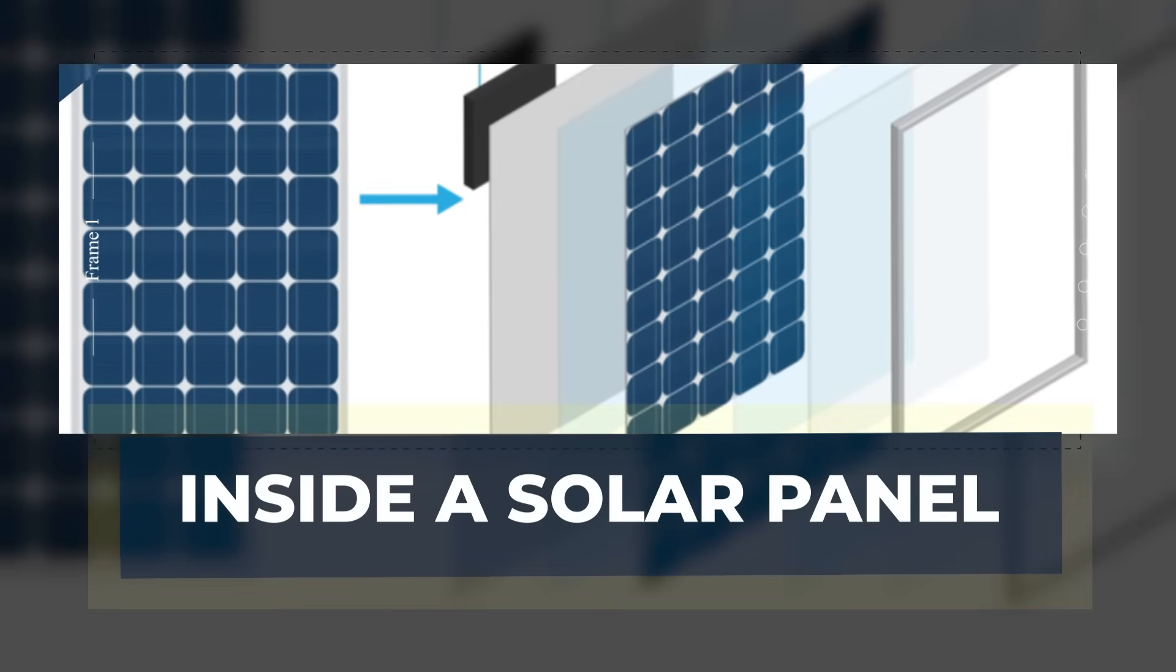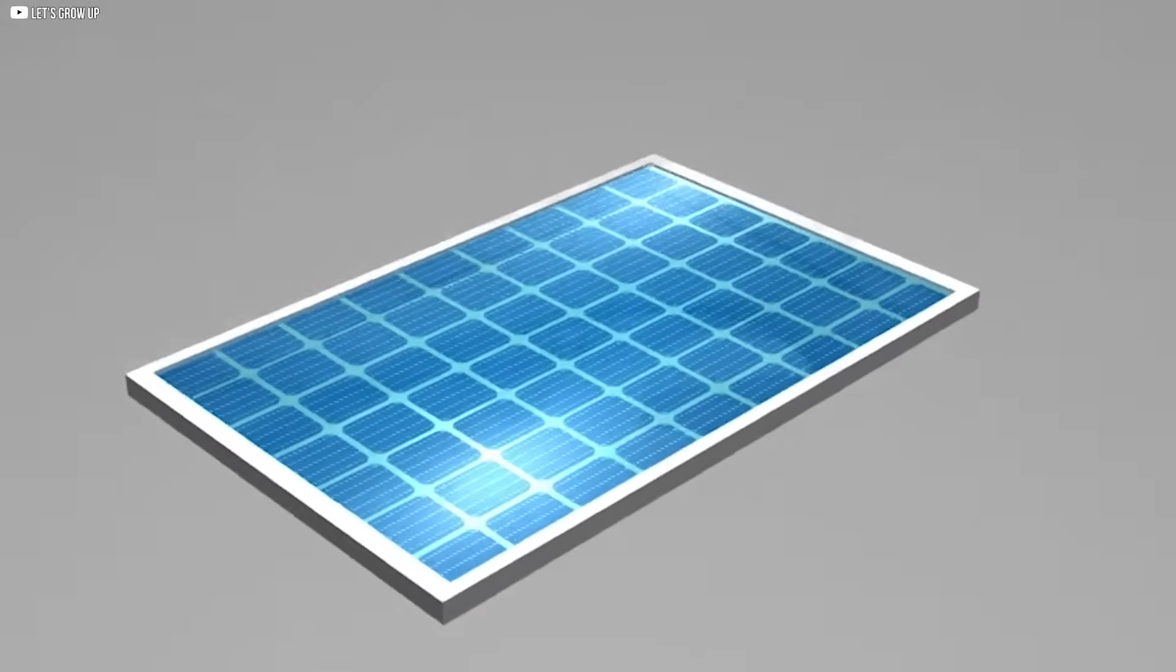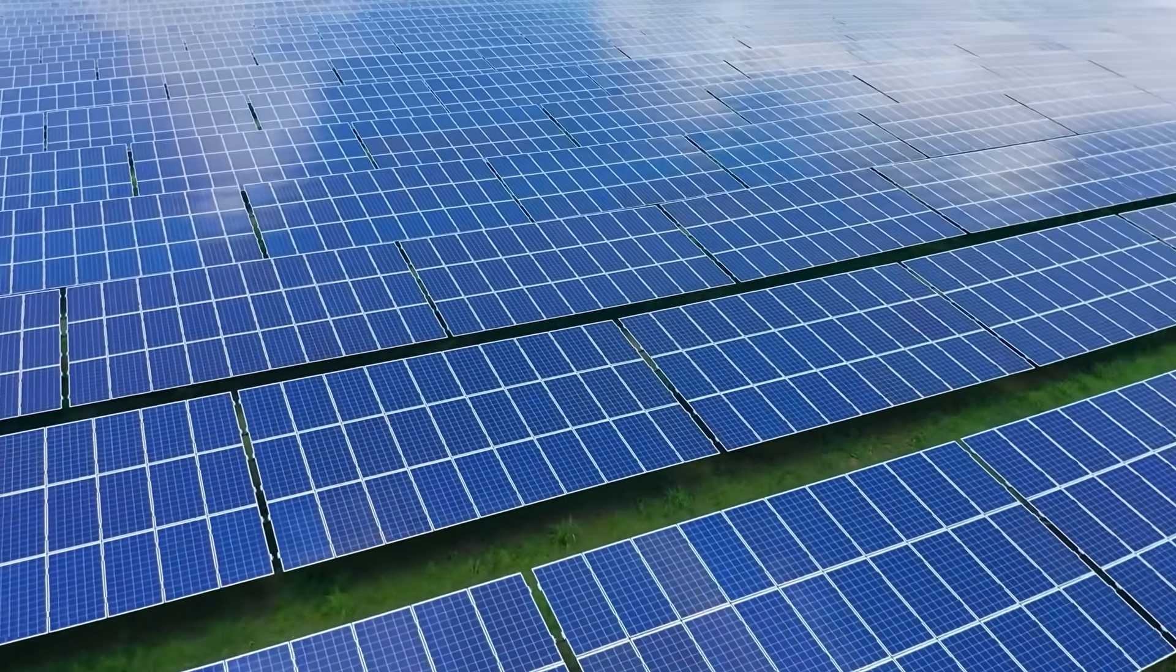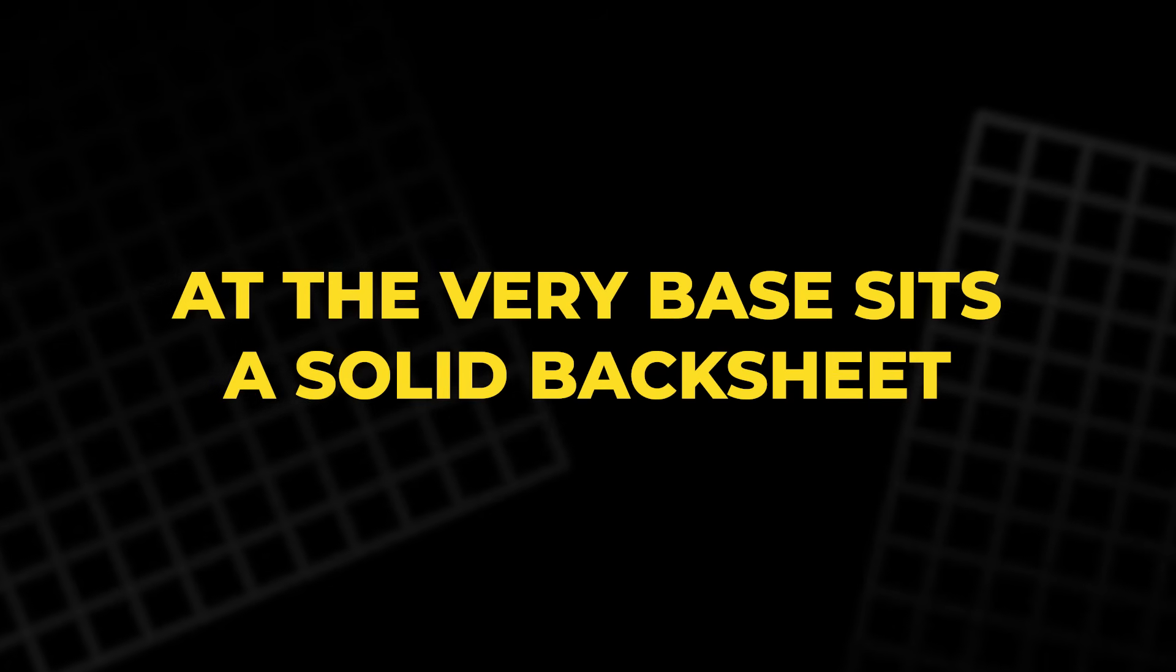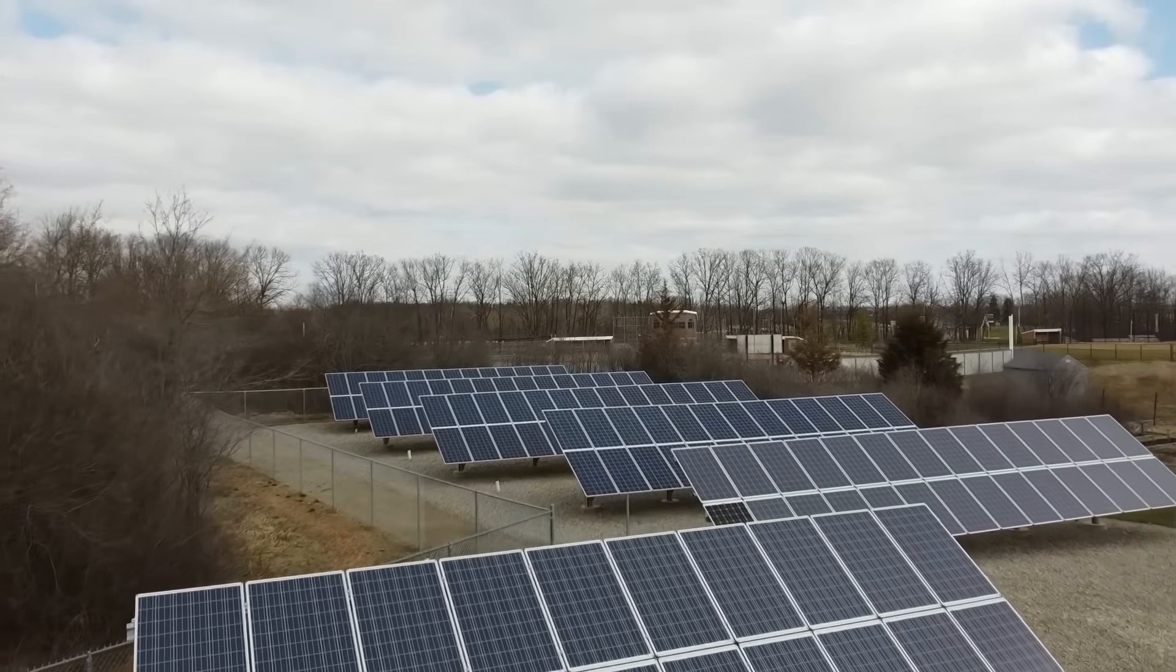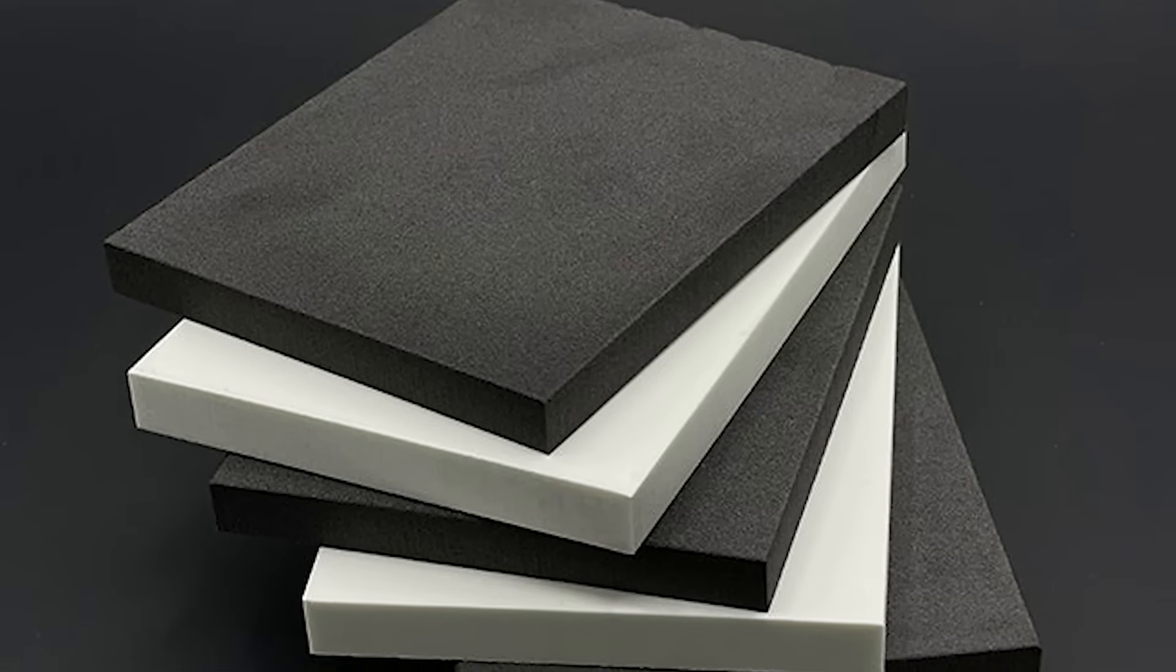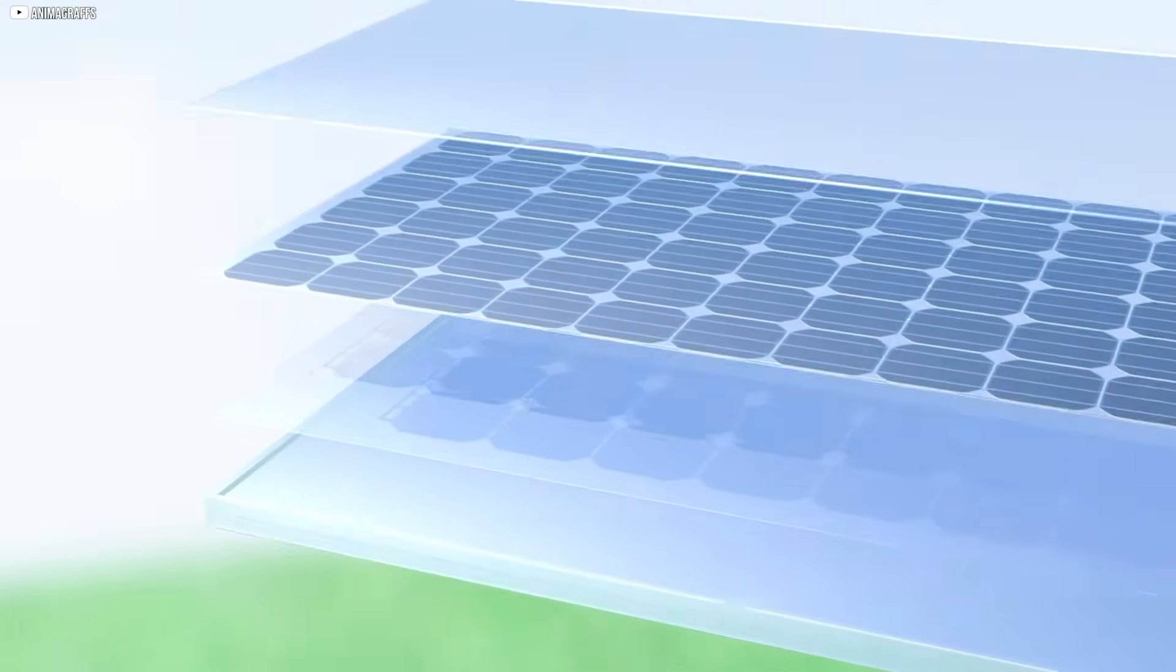Inside a solar panel. If you peeled back the layers of a solar panel, you'd find a carefully designed sandwich of materials, all working together to capture sunlight and turn it into usable power. At the very base sits a solid back sheet. Its job is simple, provides strength and block moisture from creeping in over time. On top of this, there's a layer of adhesive film, usually made from a material called EVA. This acts like a glue that holds the next layer in place.